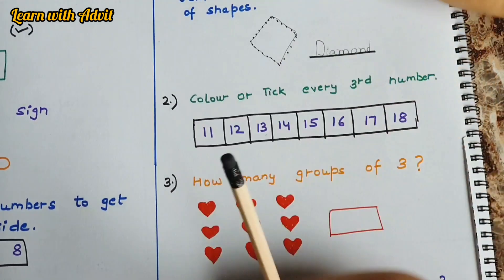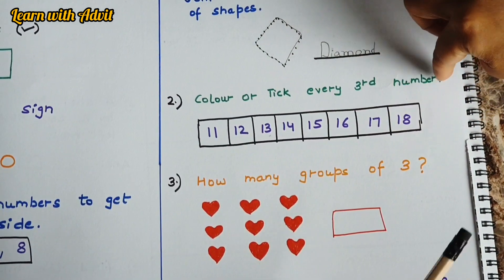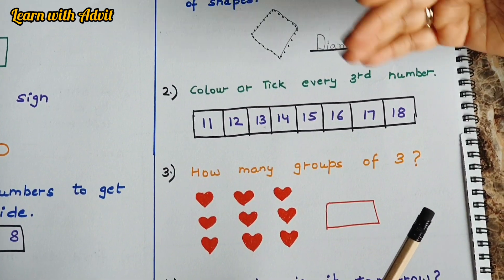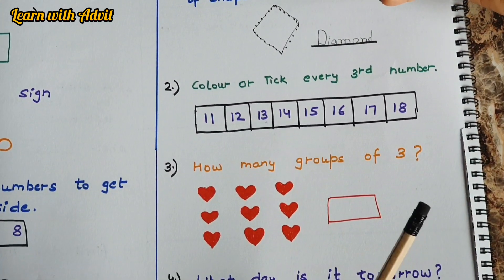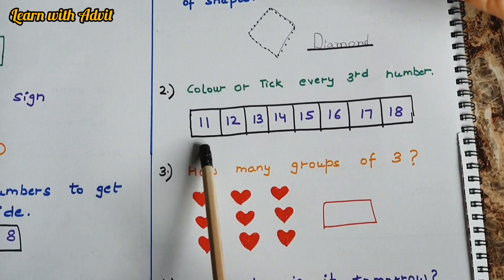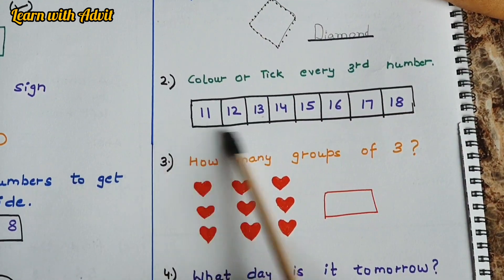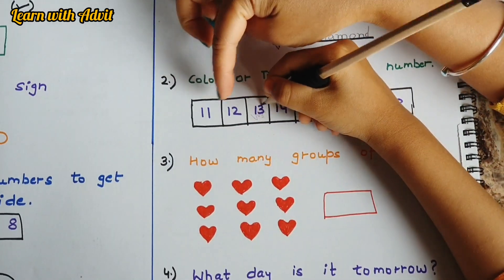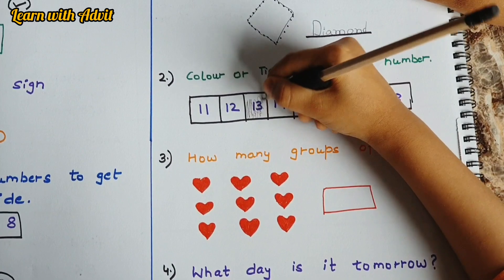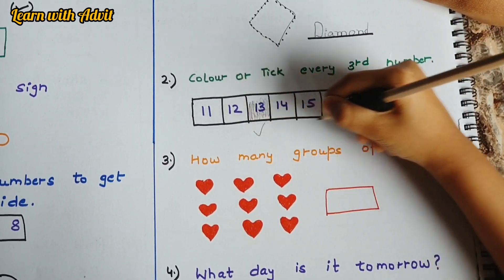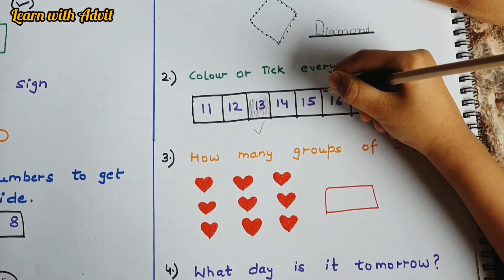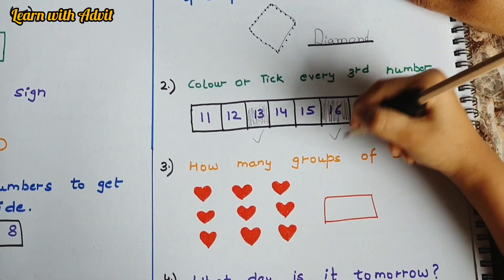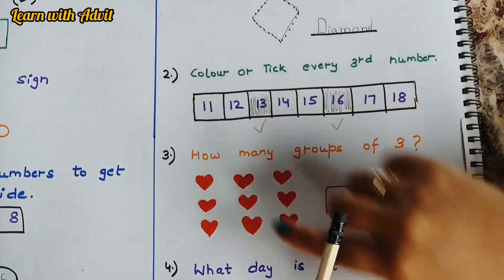Color or tick every third number. So you can tick third. Describe the position of numbers. Come on, tick every third number in this line. So I am going to color 13. 11, 12, 13. Next one is 16. I am going to color and tick. Very good.